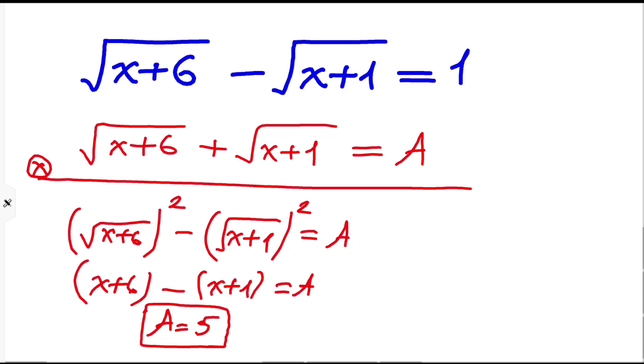Now we have square root of x plus six minus square root of x plus one equals one, and square root of x plus six plus square root of x plus one equals A, which is five.